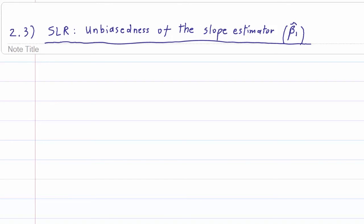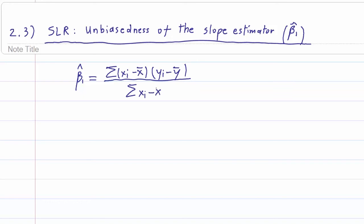In this video, we are going to derive and prove the unbiasedness of the slope estimator beta 1 hat. Beta 1 hat equals the sum of (xi minus x bar) times (yi minus y bar) over the sum of (xi minus x bar) squared. If you forgot how to derive this, please look at the video 'Derivation of the Ordinary Least Squares Estimator.' In that same video, you'll find that we can rewrite that in a simpler form: sum of (xi minus x bar) times yi over sum of (xi minus x bar) squared.